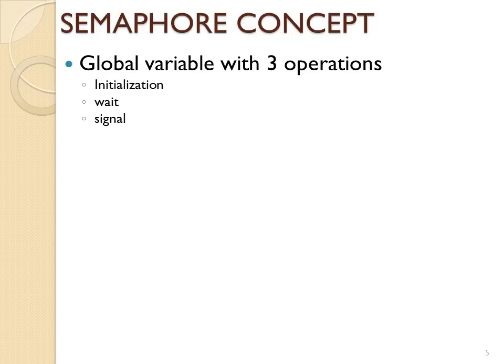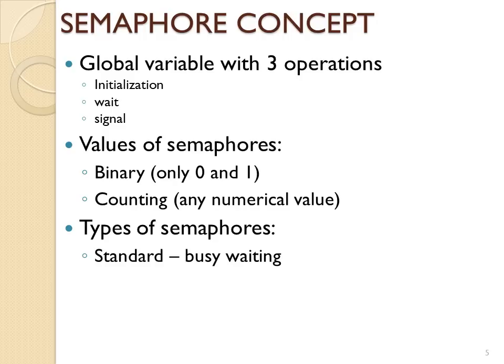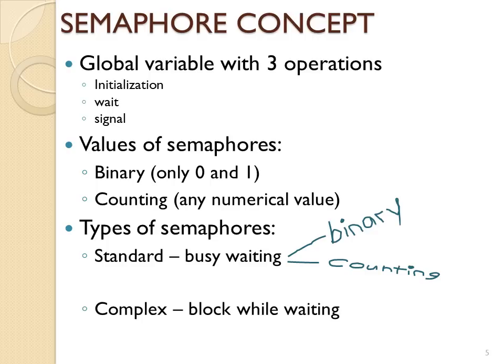To review: a semaphore is a global variable with three operations — initialization, wait, and signal. Semaphores can be binary (values zero and one) or counting (any numerical value). A standard semaphore does no operation if the value is less than or equal to zero, and decrements if greater than zero — this can be binary or counting. A complex semaphore blocks the process while waiting, and can also be either binary or counting.